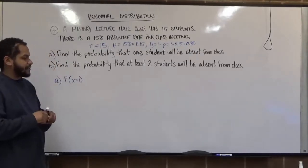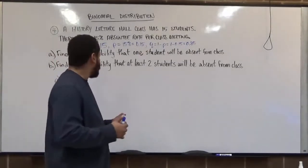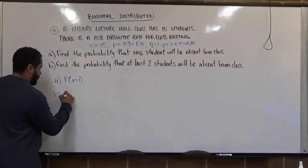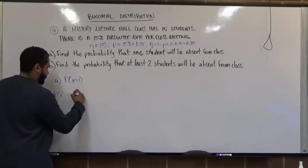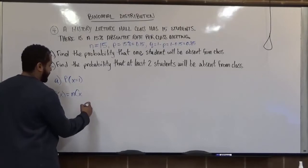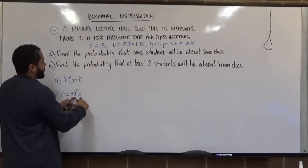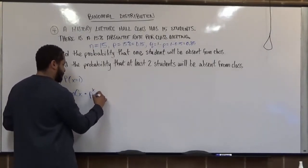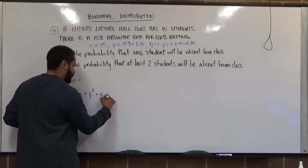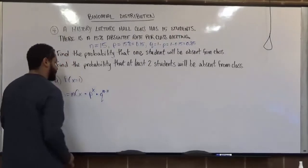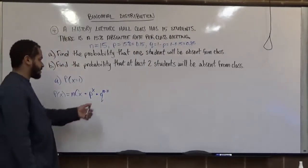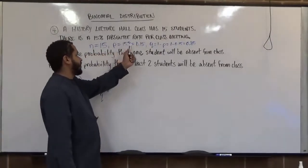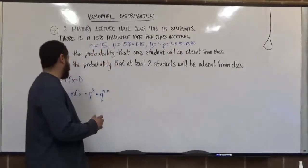The binomial distribution function works with all four components. The probability of X equals the combination of N and X — where N is the number of selections and X is the number of successful selections — multiplied by the probability of success to the power of X, times Q to the power of N minus X, where N is the number of trials and X is the number of successful trials.